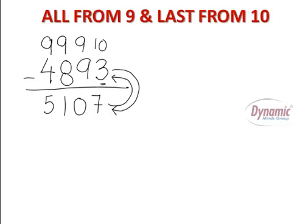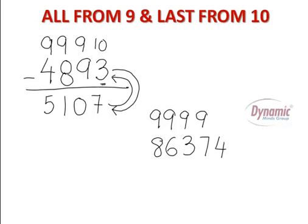Let's say you have to find out the complement of 8, 6, 3, 7, 4. To find out the complement of this number subtract all the numbers from 9 and the last number from 10.